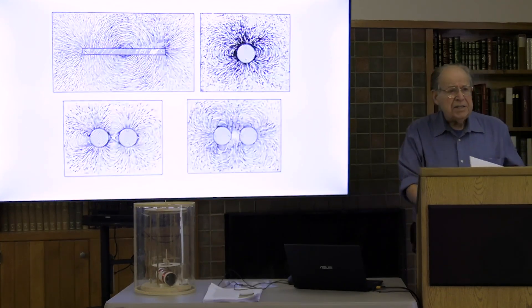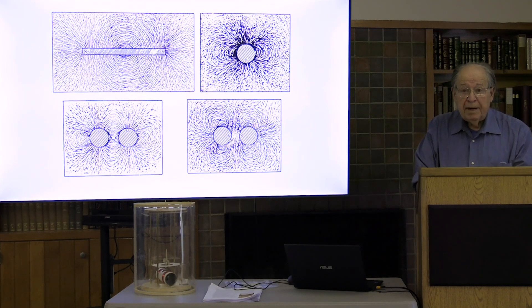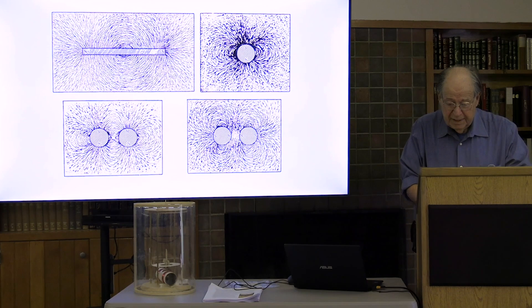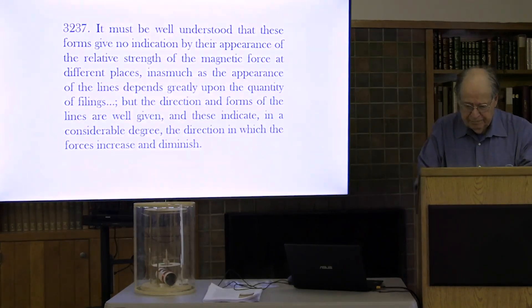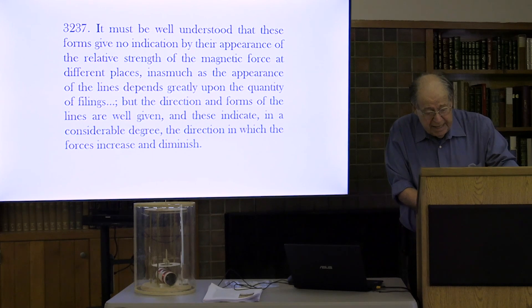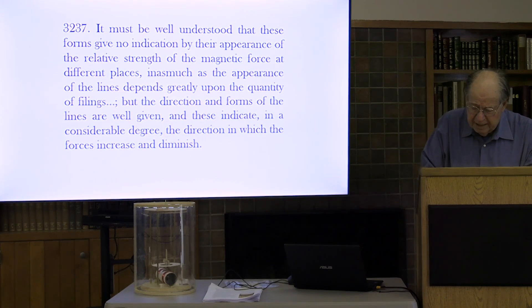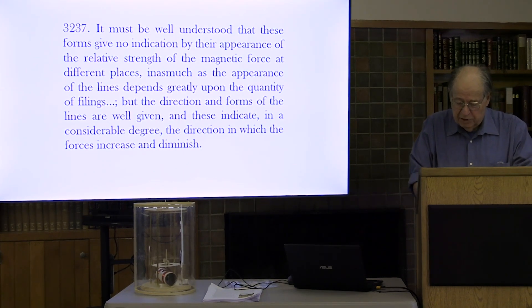But how can Faraday say anything at all about the power represented by a pattern of magnetic lines? Where power is concerned, visual cues are not enough. The magnetic curves formed by iron filings suggest, but they cannot prove, that the strength of magnetic force depends on the concentration of lines of force. It must be well understood that these forms give no indication by their appearance of the relative strength of the magnetic force at different places, inasmuch as the appearance of the lines depends greatly upon the quantity of filings. But the direction and forms of the lines are well given, and these indicate, in a considerable degree, the direction in which the forces increase and diminish.